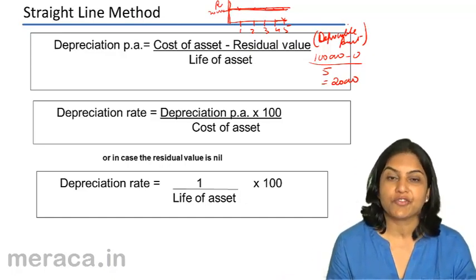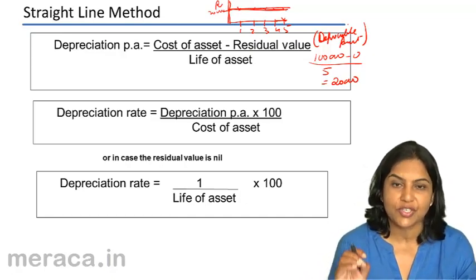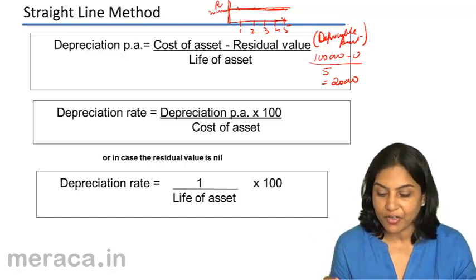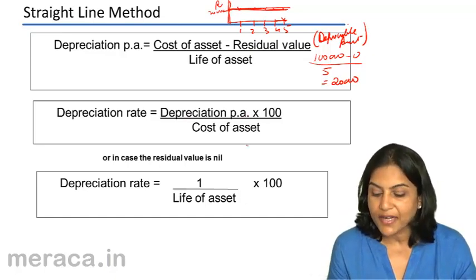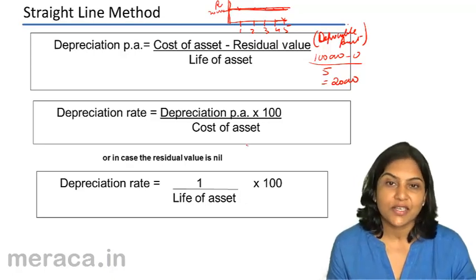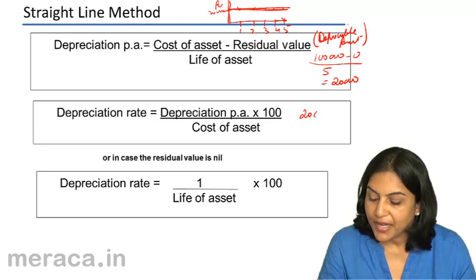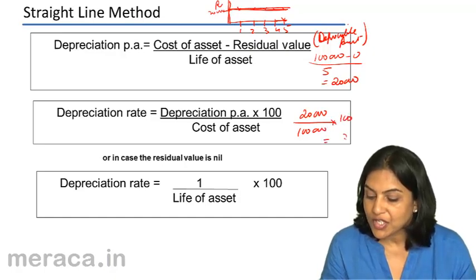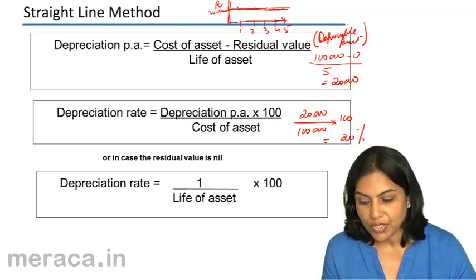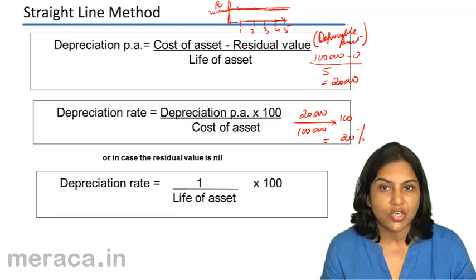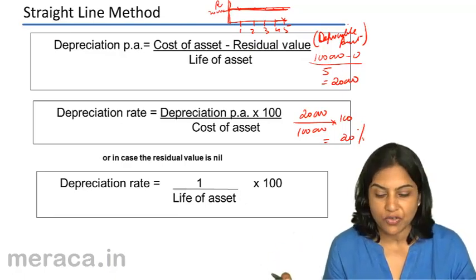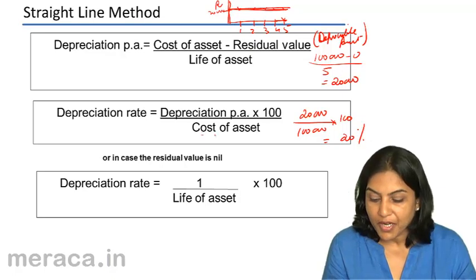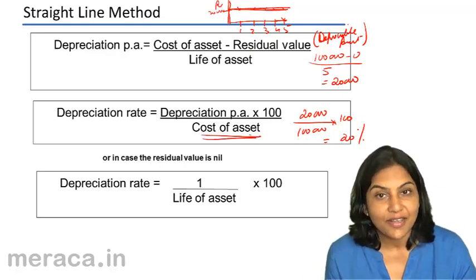What is the rate of depreciation? The rate of depreciation is the expression of depreciation in terms of percentage. It is depreciation per annum divided by the cost of the asset, multiplied by 100. In our example, depreciation each year is 20,000; 20,000 divided by 1 lakh into 100 gives us 20%. This 20% is charged on the cost of the asset, not on the residual value.